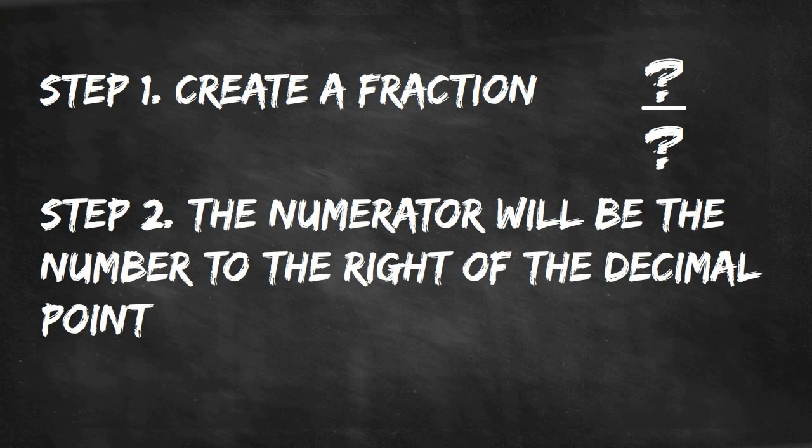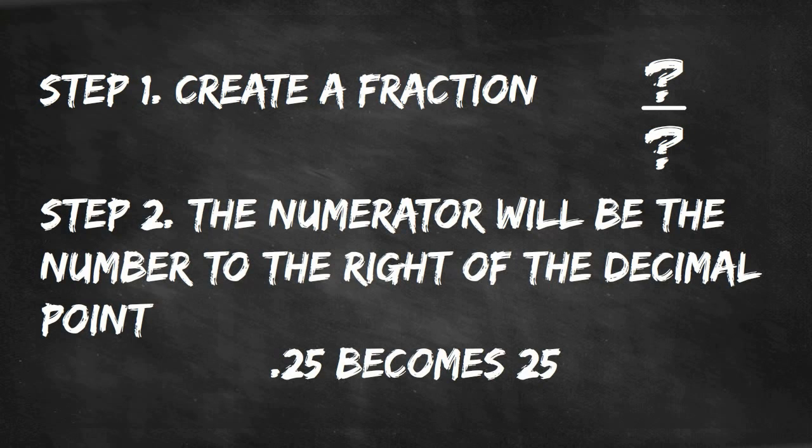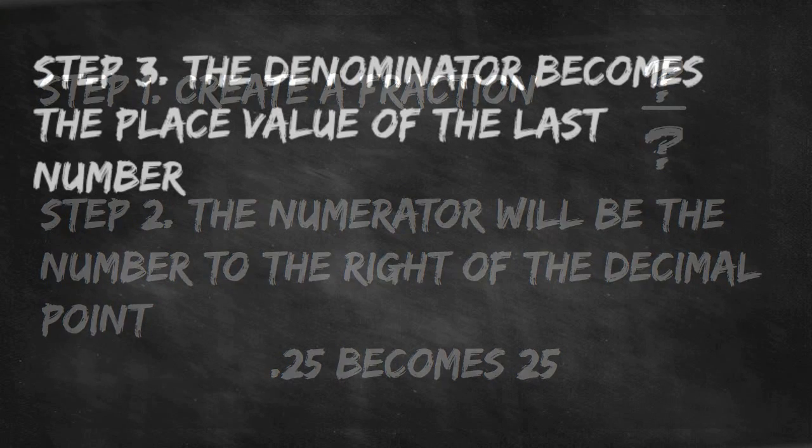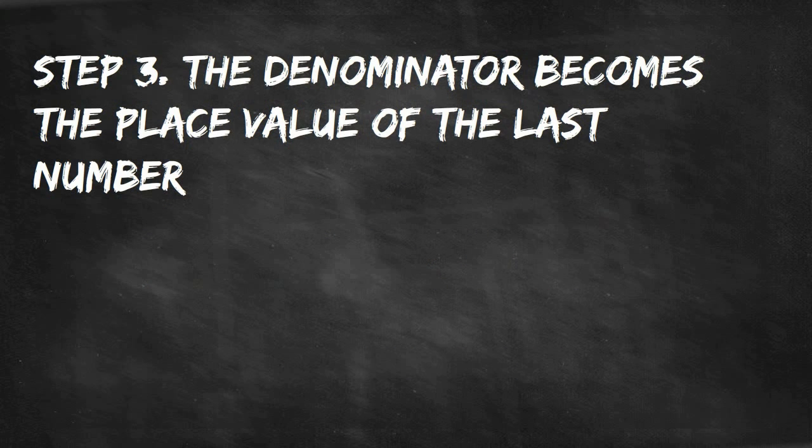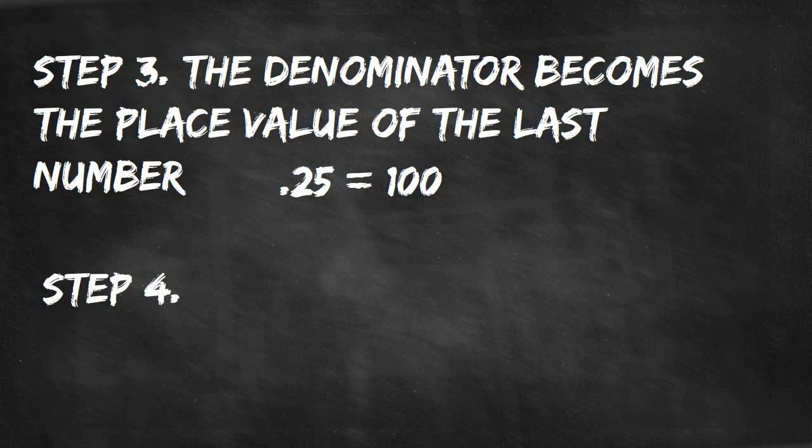Step 2: The numerator will be the number to the right of the decimal point. Step 3: The denominator will be the last place value after the decimal. Step 4: We will simplify the fraction.